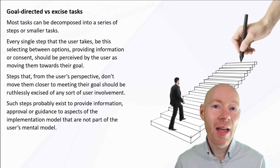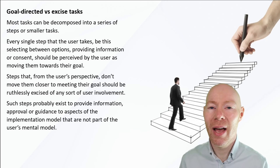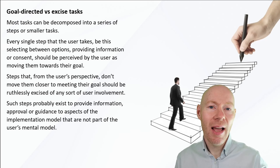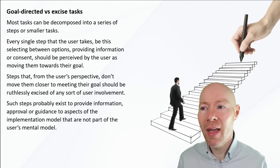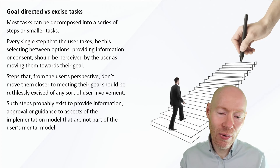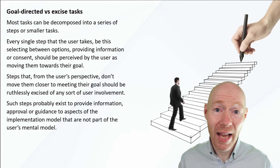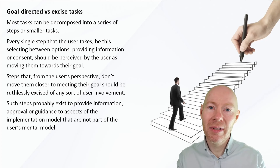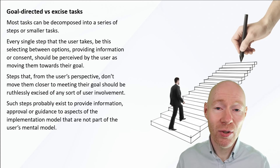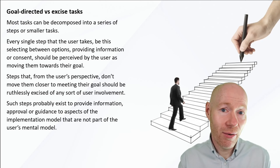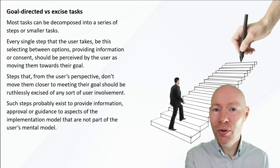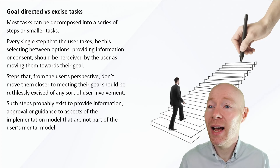So how can we do that? A really useful way is to think about what are goal-directed versus excise tasks. It doesn't really matter what the user is doing — if you think about how the user does a process, you can break that up into a series of steps. As designers, that's something we should do: whenever we have a sufficiently well-developed prototype, we should think about what are the steps that the user goes through when completing a particular task.